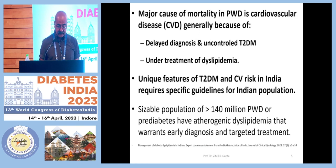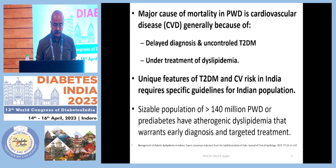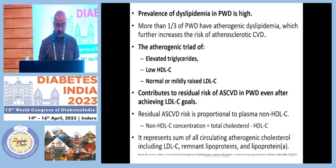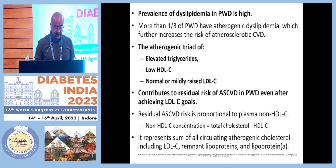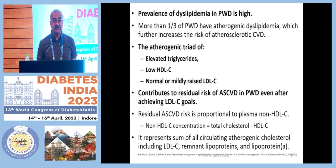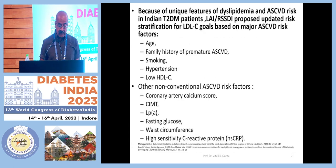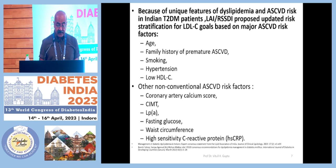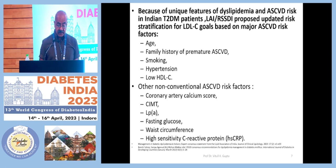The unique feature of type 2 diabetes and CV risk in India requires specific guidelines for the Indian population. We cannot apply Western guidelines to Indians. The prevalence of dyslipidemia is high in India, characterized by an atherogenic triad incorporating elevated triglycerides, low HDL-C levels, and normal or mildly raised LDL-C levels. This contributes to residual risk of atherosclerotic cardiovascular disease and diabetes even after achieving LDL-C goals.